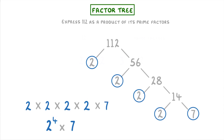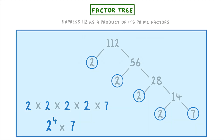One last thing to mention is that this whole process we've been covering in this video is sometimes called prime factorization, which just means to rewrite a number as a product of its prime factors. So in this last question, we basically did the prime factorization of 112.